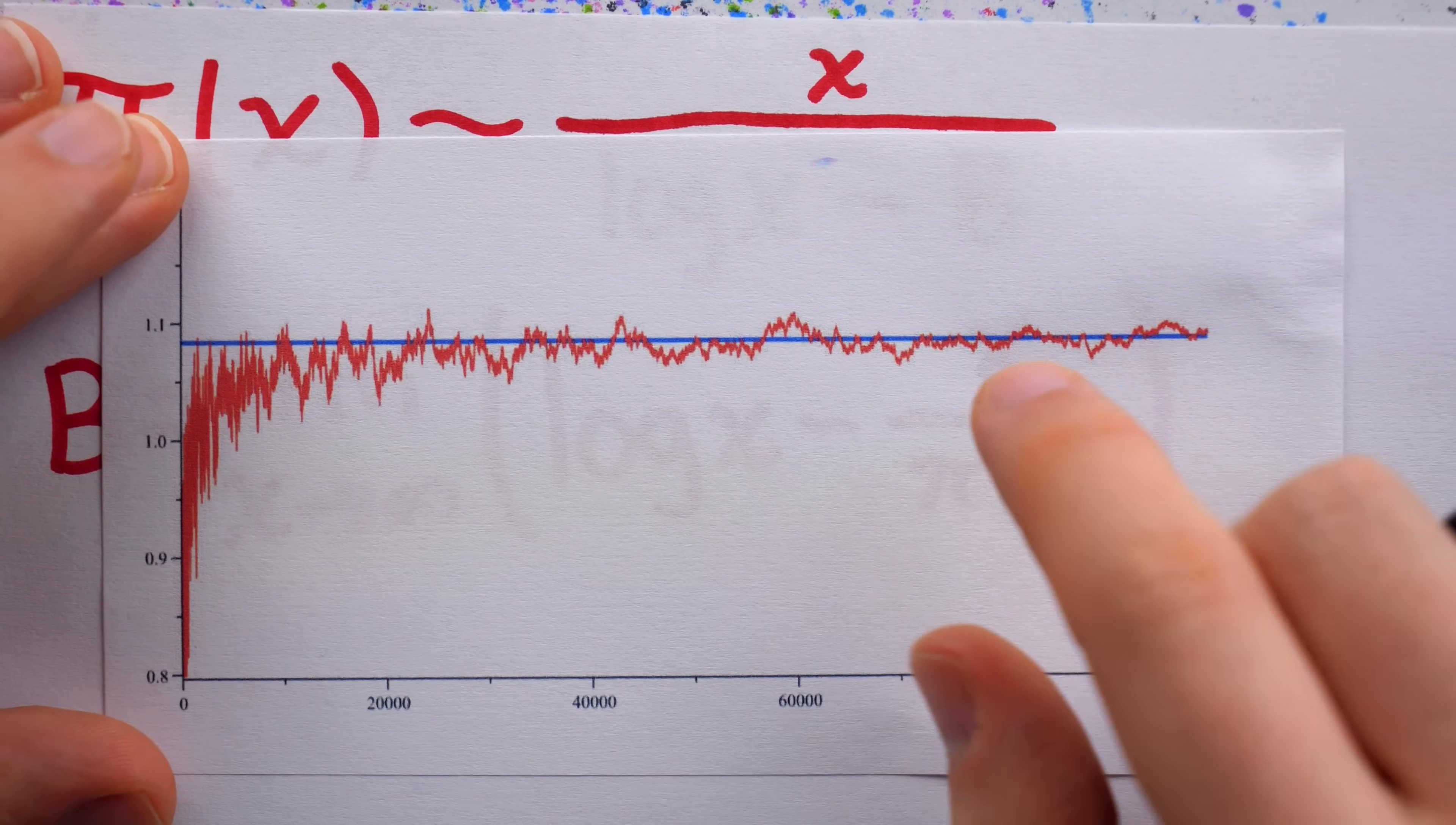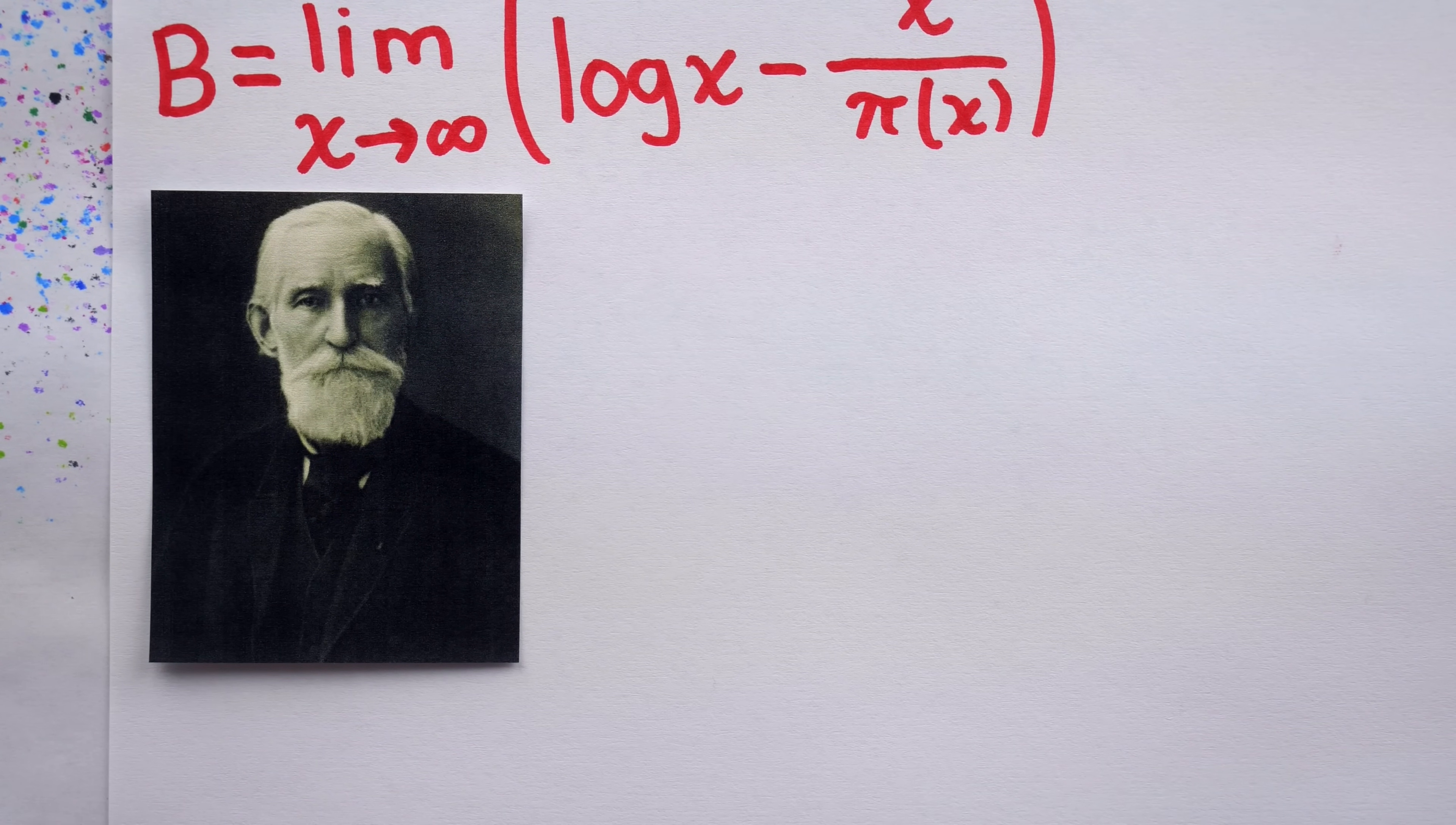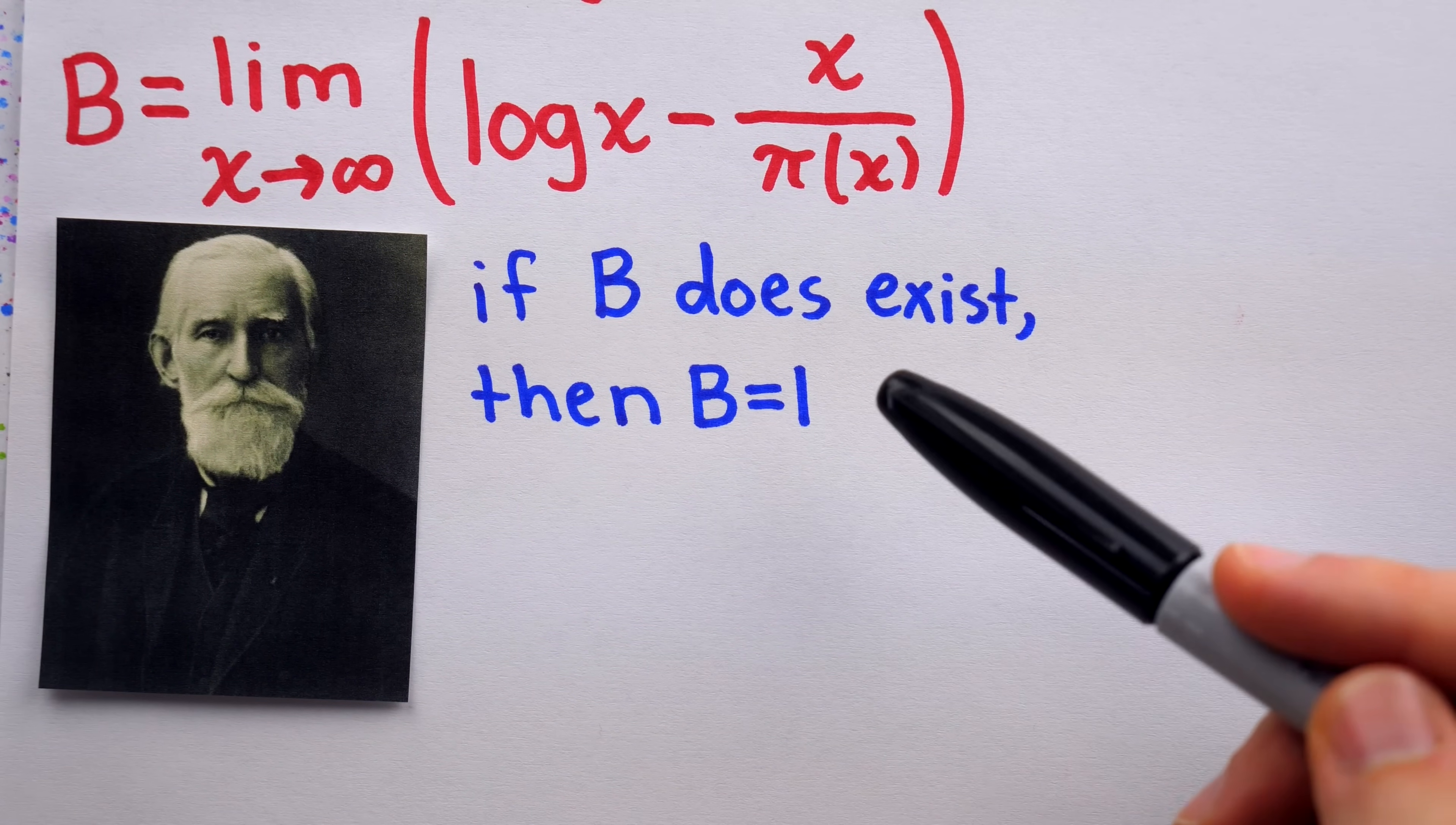Just look at this plot, for example. What we see here in red is this function, whose limit at infinity is the value of b, if it exists. And it appears that this red function is approaching this horizontal line. This blue horizontal line is that approximation Legendre gave for his constant, 1.08366. So that was in 1808. But then in 1849, Russian mathematician Pavnuti Chebyshev proved Legendre wrong. Remember that it wasn't even known at the time if b existed. It wasn't known if this limit existed. But Chebyshev proved that if b does exist, it must in fact equal the multiplicative identity 1. So this didn't settle the issue of finding the value of Legendre's constant, except to say that if it does have a value, it must be 1.